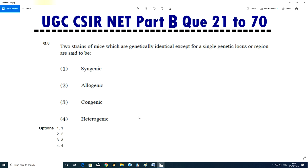Question No.8 - Two strain of mice which are genetically identical except for single genetic locus or region are said to be syngeneic, allogeneic, congenic, or heterogenic? Answer will be C, congenic, means third.